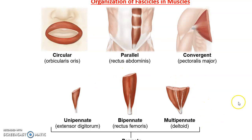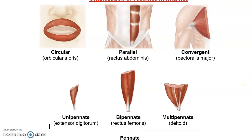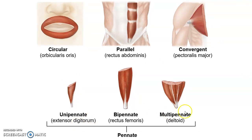Muscle fascicles within a muscle can be arranged in different ways. A circular arrangement — for instance, the orbicularis oris around the mouth — inserts into itself. In a parallel arrangement, the muscle fibers all run in the same orientation, parallel to the midline. In a convergent arrangement, the fascicles all converge down to a point. There is also the pinnate formation, which has three subcategories.